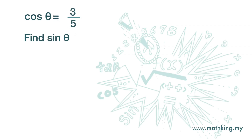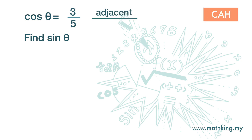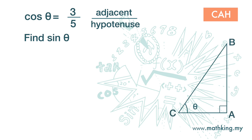Given cos theta is 3 over 5, find sine theta. Now cosine — CAH — is adjacent over hypotenuse. Given cosine theta is 3 over 5, we can actually draw a triangle like this, where the adjacent of theta is 3 and the hypotenuse of theta is 5.